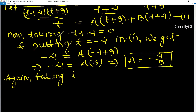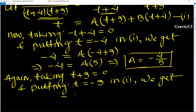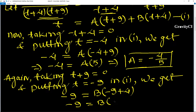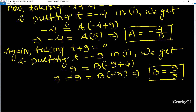Similarly, taking t+9 equal to 0, so t equal to minus 9. Putting in the first equation, we get: minus 9 = B(minus 9 + 4) = B(minus 5). So B equal to 9 by 5. Now A and B values are found.